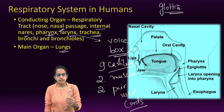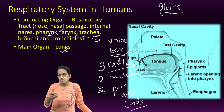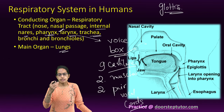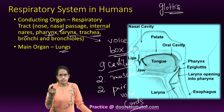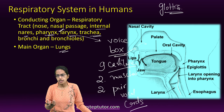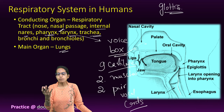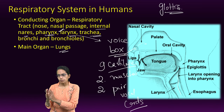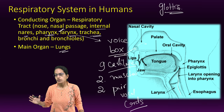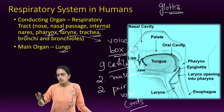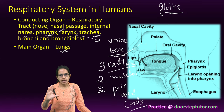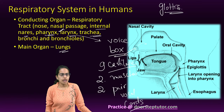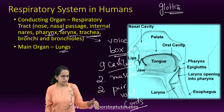The next is the trachea, or wind pipe. It contains C-shaped cartilage rings, also called bronchaneous rings, which prevent the collapse of the trachea and support the tracheal wall.